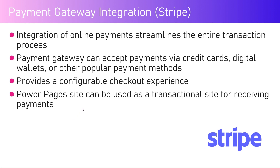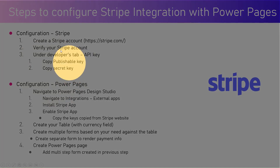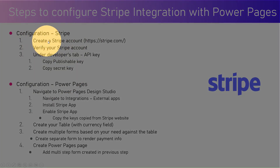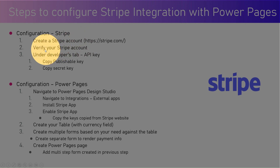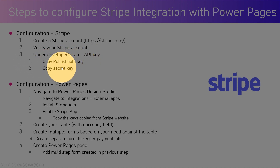The steps to configure Stripe integration with Power Pages are divided into two parts: configuration at the Stripe level and configuration at the Power Pages level. First, you need to create a valid Stripe account by navigating to the Stripe URL. Taking a development approach rather than going directly to production, you go into the Developers tab and generate an API key. There are two keys: a publishable key and a secret key.